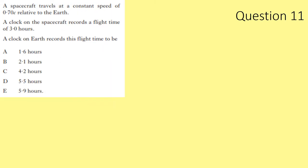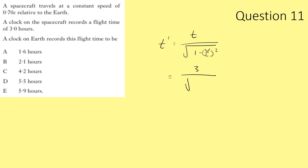Question 11. A spacecraft travels at 0.7 C relative to Earth. A clock on the spacecraft records 3 hours. Using the time dilation equation: T' = T / √(1 − (v/c)²), where T = 3 hours and v/c = 0.7. We expect T' to be longer, so eliminate A and B. Plugging in gives 4.2 hours. Answer: C.